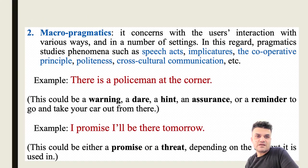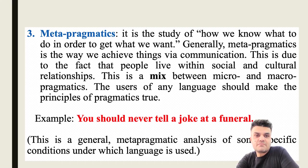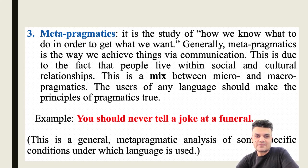The second scope is macro pragmatics, which concerns the user's intention in various ways and in a number of settings. In this regard, pragmatics studies phenomena such as speech acts, implicatures, the cooperative principle, politeness, and so on. The third is meta pragmatics — the study of how we know what to do in order to get what we want. Meta pragmatics is the way we achieve things via communication, due to the fact that people live within social and cultural relationships. It is a kind of mix between micro and macro pragmatics.